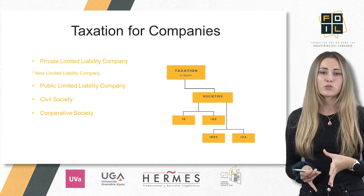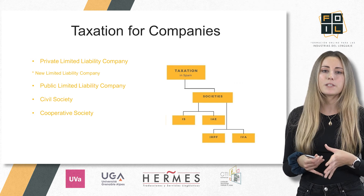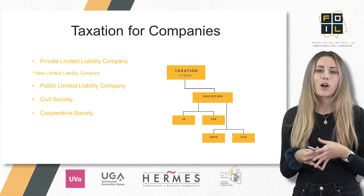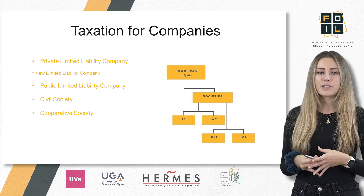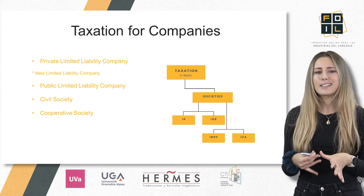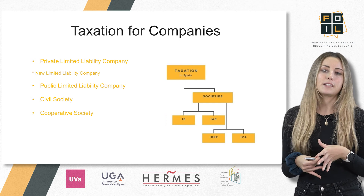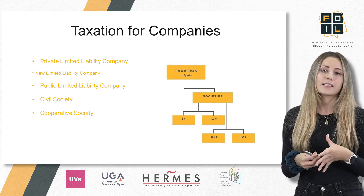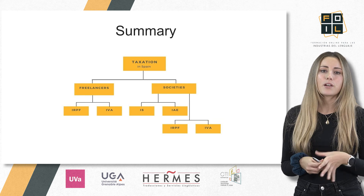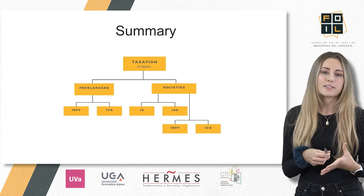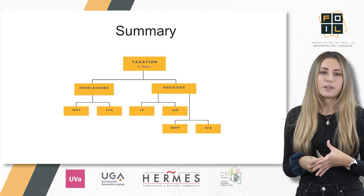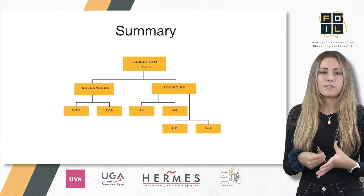In the language industry, and more specifically in the scope of translation and interpreting, the most common enterprises are private limited liability companies, public limited liability companies, civil societies and cooperatives. As seen in the graphic, all of them must pay direct taxes such as IS, IAE and IRPF, and indirect taxes such as IVA.